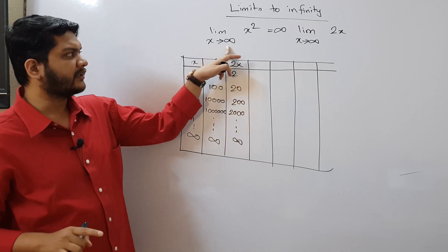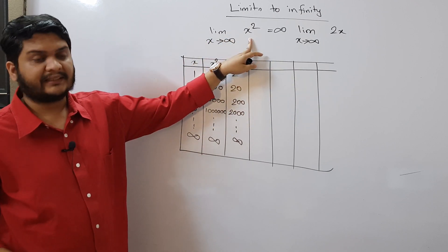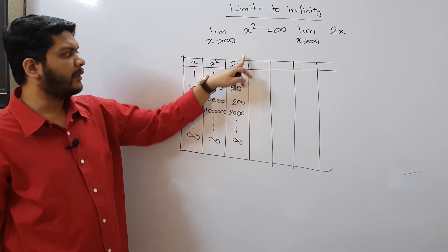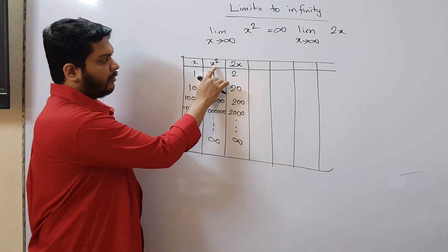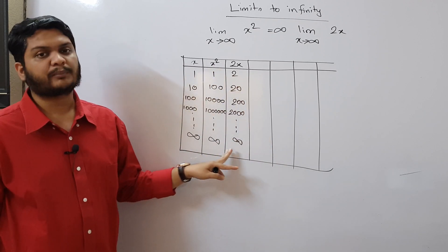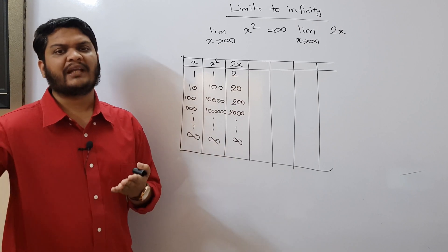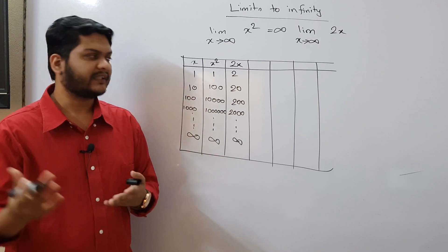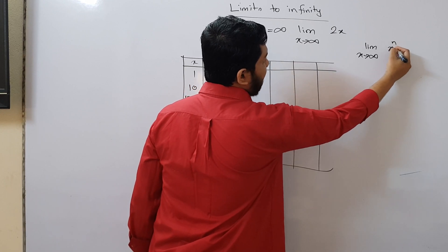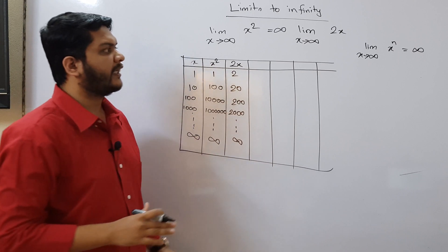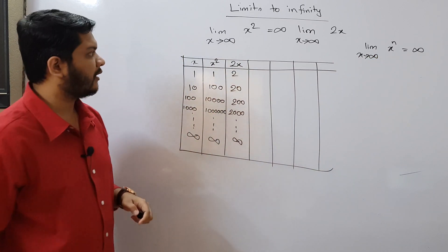We can come to a conclusion that if the value of the variable tends to positive infinity and we have an expression where the degree of the variable is positive — it could be x (degree 1), x squared (degree 2), x cubed, x to the power 4, or any positive degree — the value will always be plus infinity. So we can write: limit x tends to infinity of x to the power n equals plus infinity.